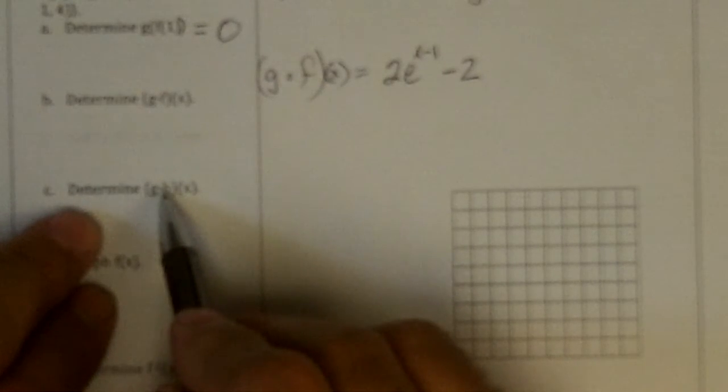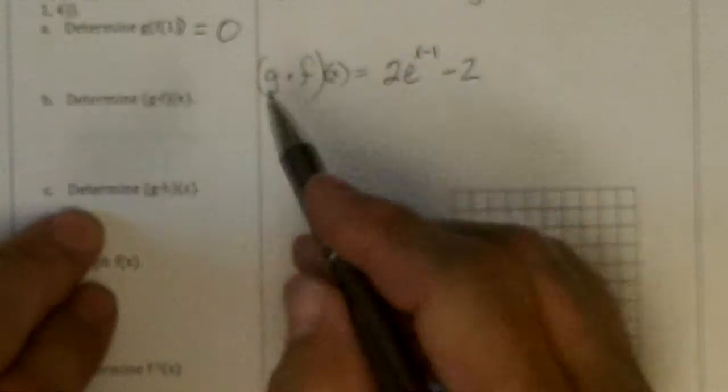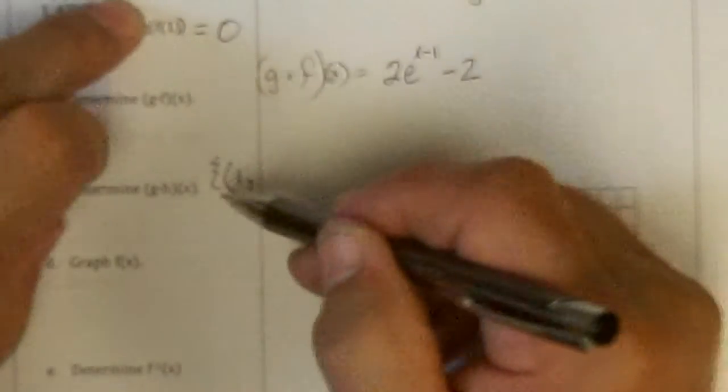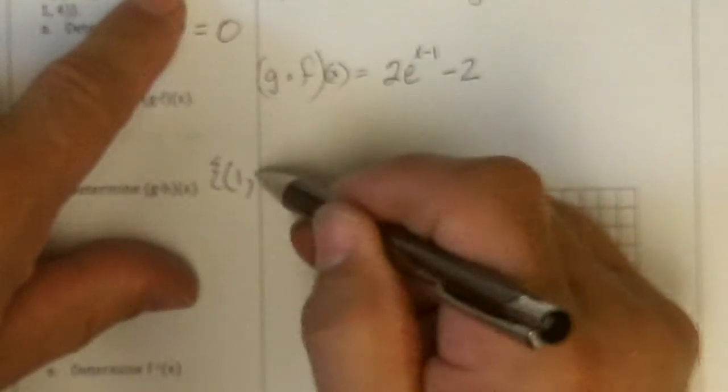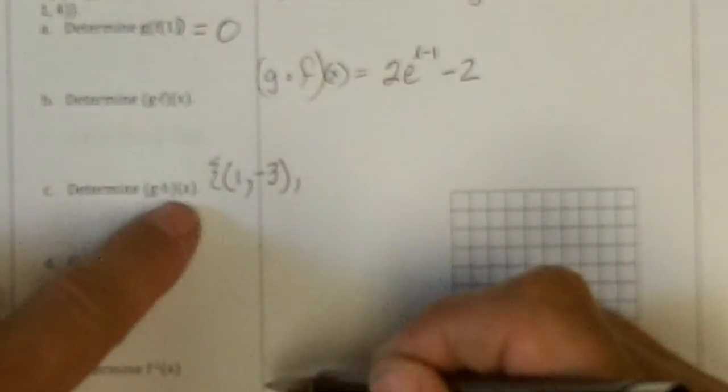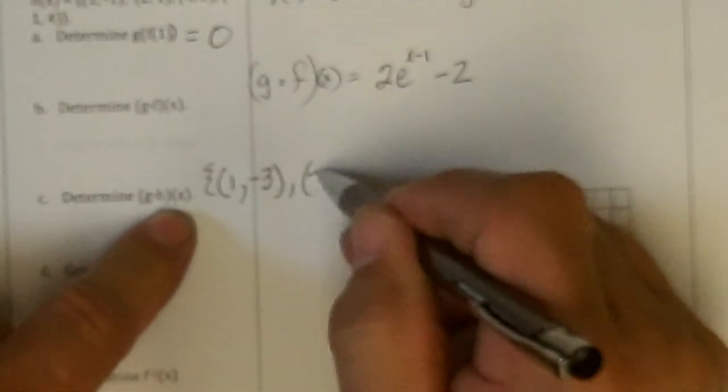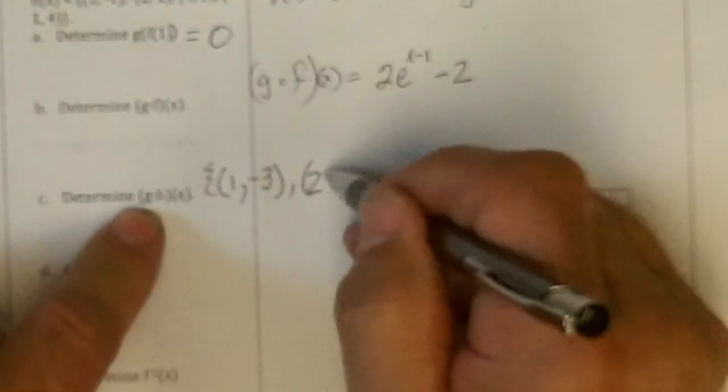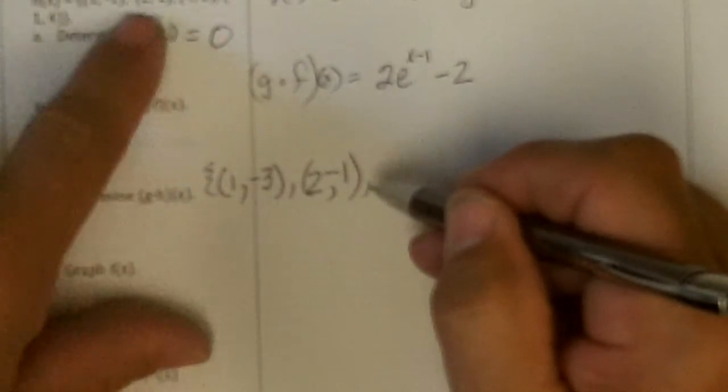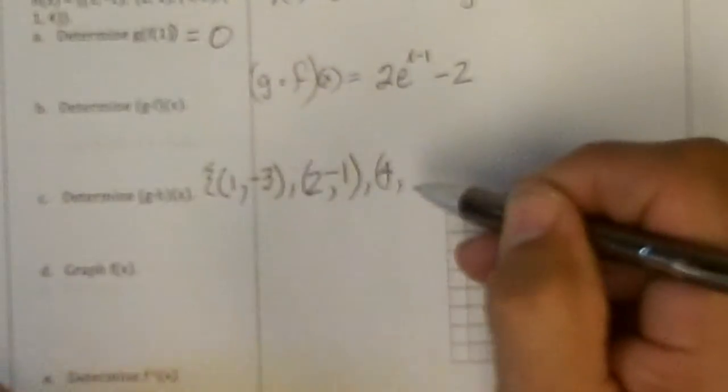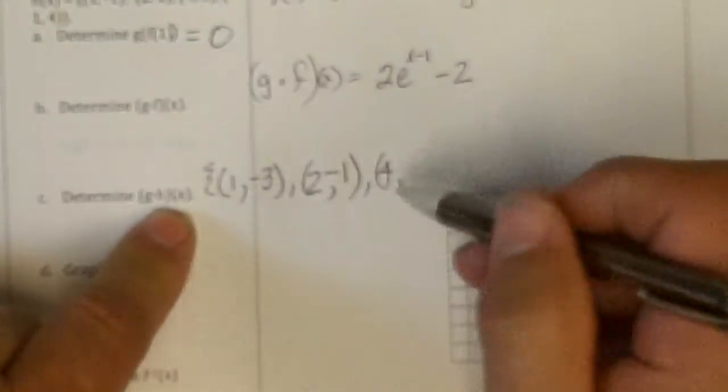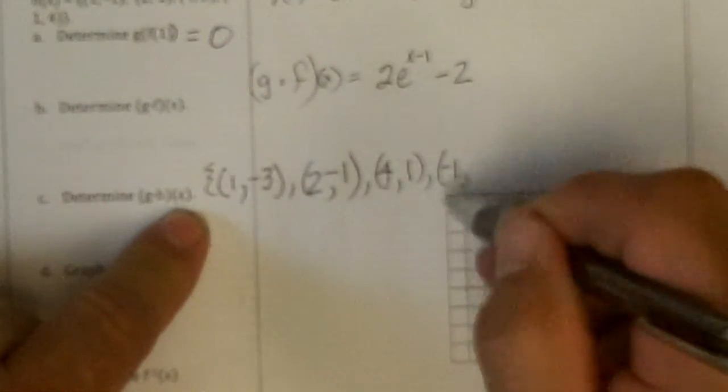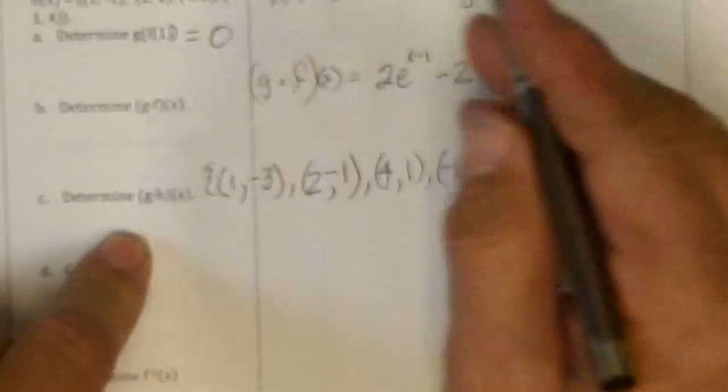Determine g of h of x. So I got to put stuff into h. The ones I can put into h are: 1 goes to minus 1, then I'm supposed to put that into g, so minus 1 minus 2 is minus 3. Then I'm supposed to put in 2. So 2 into h goes to 1, then I put that into g: 1 minus 2 is negative 1. And then I got to put in 4, goes to 3. 3 in there is 3 minus 2, or 1. And then I got to put in negative 1. Negative 1 into h goes to 4, and 4 minus 2 is 2.